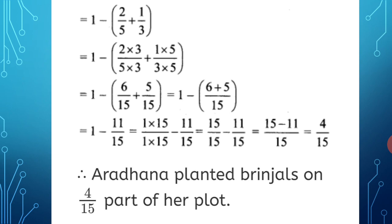Now 1 has no denominator, so we cross multiply: 1 × 15 upon 1 × 15, minus 11 upon 15. This gives 15 upon 15 minus 11 upon 15. 15 − 11 = 4 upon 15. Therefore, Aaradhana planted brinjals on 4 upon 15 part of her plot.